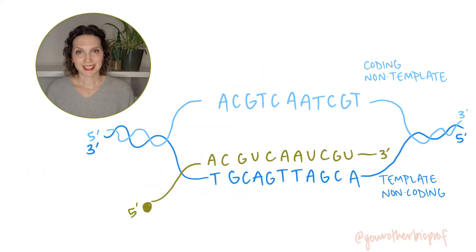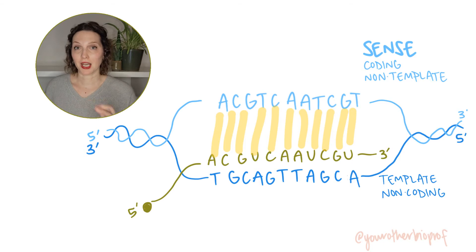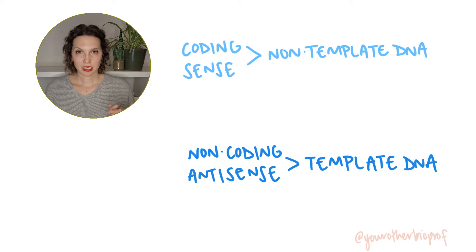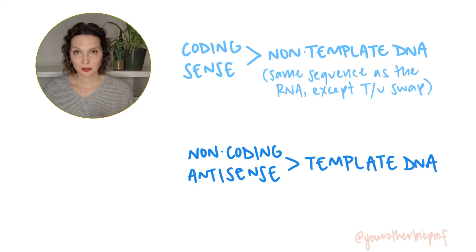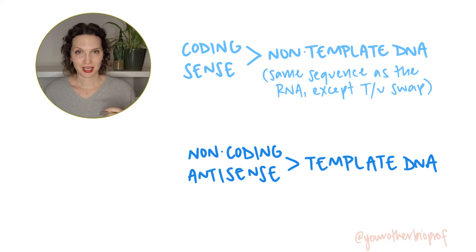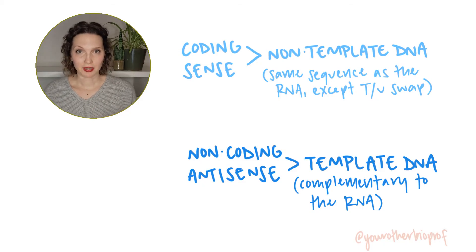These can also be described as the sense strand of DNA, which has the same sequence as the RNA that will be produced — also known as the non-template strand of DNA. And the anti-sense DNA strand, which is complementary to the RNA being produced, also known as the non-coding strand. So these are synonyms: non-template DNA, coding strand DNA, and sense strand DNA all refer to the DNA strand not used as the template for transcription, but which has the same sequence as the RNA being produced. Template DNA strand, anti-sense DNA strand, and non-coding DNA strand are also all synonyms — they all refer to the DNA strand used as the template and complementary to the RNA produced.